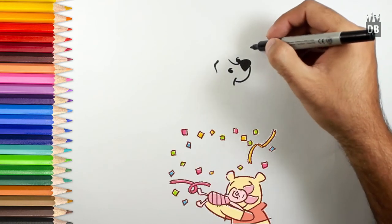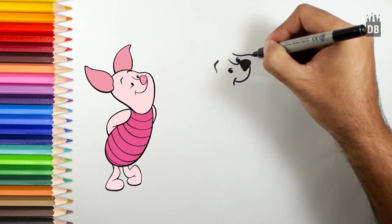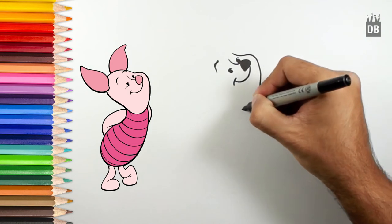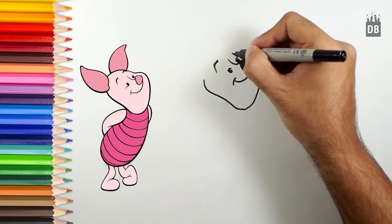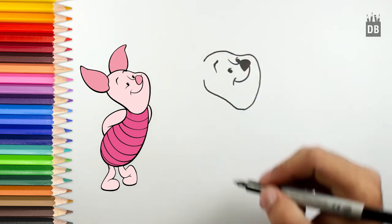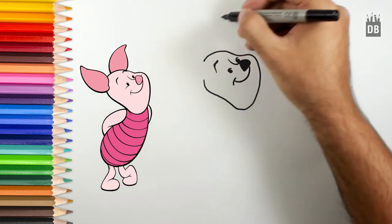From here, his face will come like I said, a big oval from here, an oval.